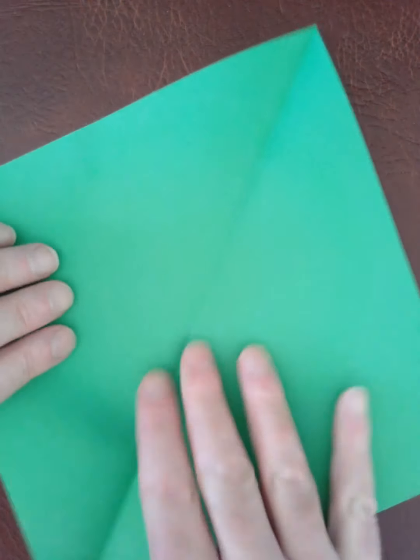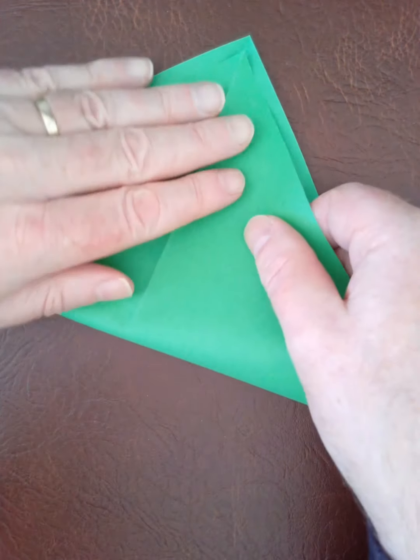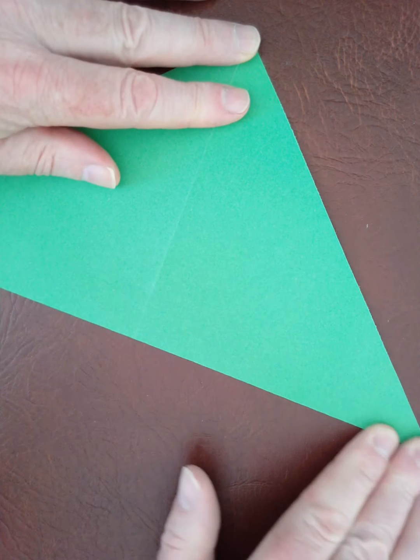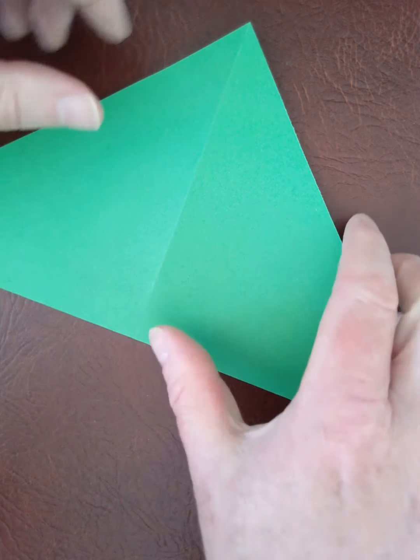So the first thing we're going to do is we're going to open up that square and fold it along the other way and there's going to be lots of folds here so we need to take care to make the folds very carefully.